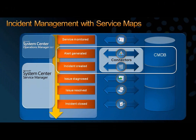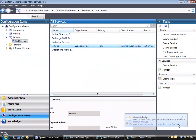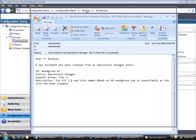When an application service monitored by System Center Operations Manager stops unexpectedly, System Center Operations Manager detects the application failure and generates an alert. The System Center Service Manager connector to System Center Operations Manager uses subscriptions to receive that alert. The alert is used to generate a new incident in System Center Service Manager and assign that incident to an IT Operations Analyst.